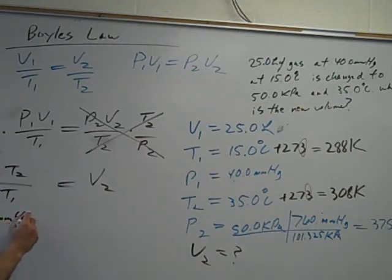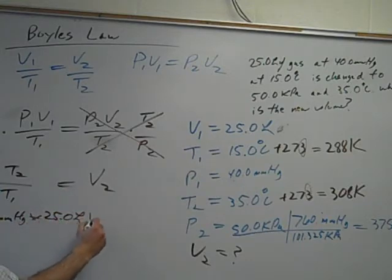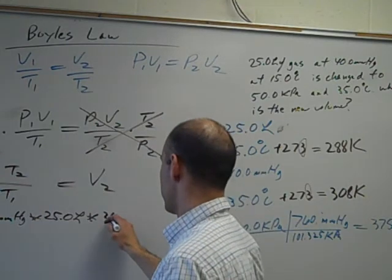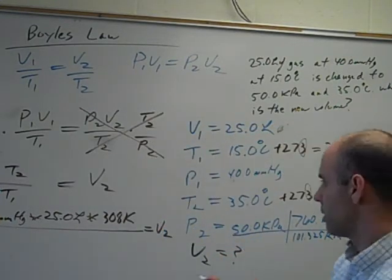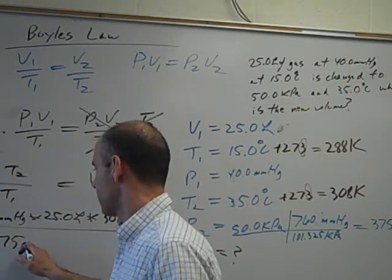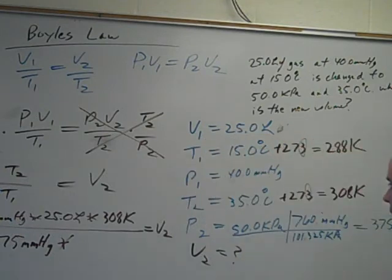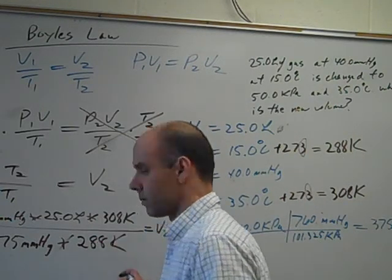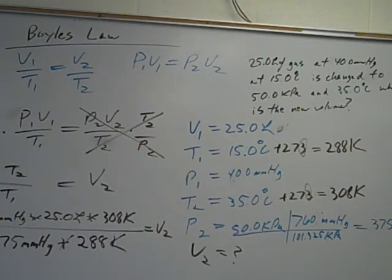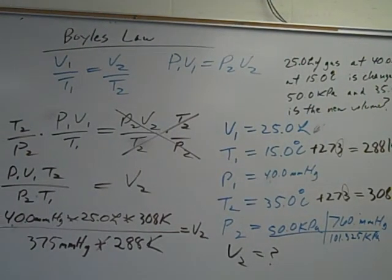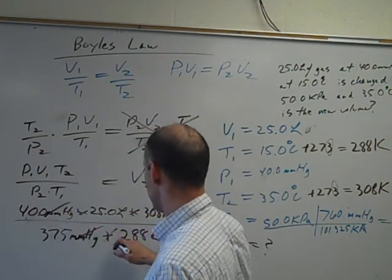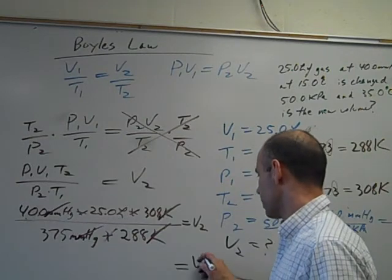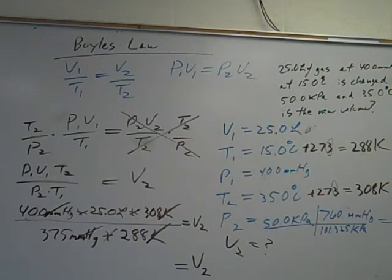So then we have P1 V1 times T2 over P2 times T1. Now let's plug in the numbers. 40 millimeters of mercury times V1, 25 liters times T2, 308, divided by P2, which is 375, divided by T1, which is 288. So millimeters of mercury will cancel. Kelvin will cancel. The only unit left that will not cancel is liters, which is good, because liters is a measurement of volume.